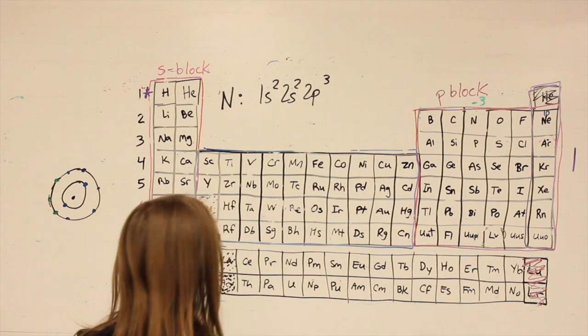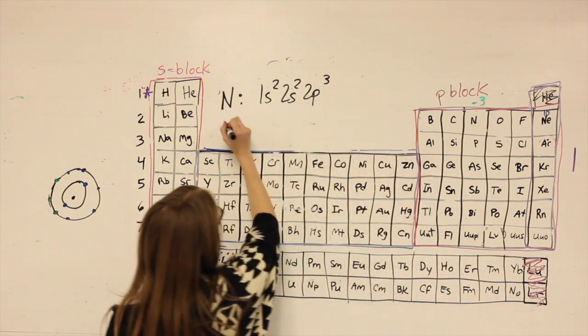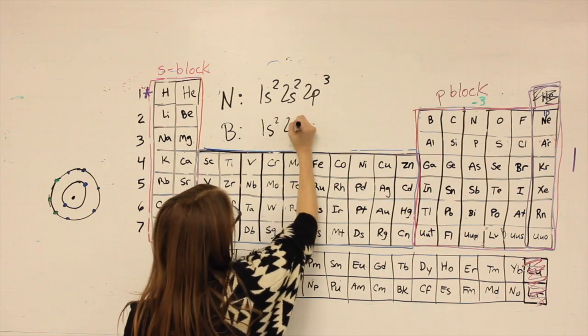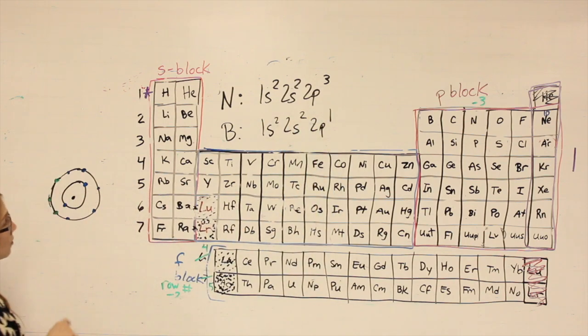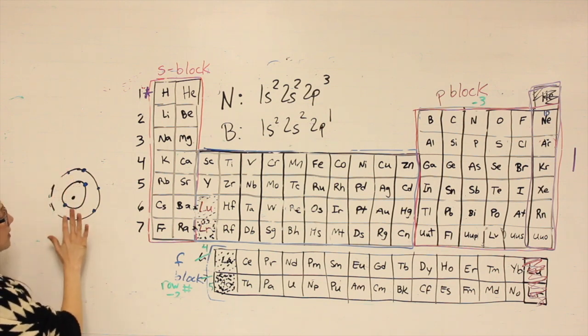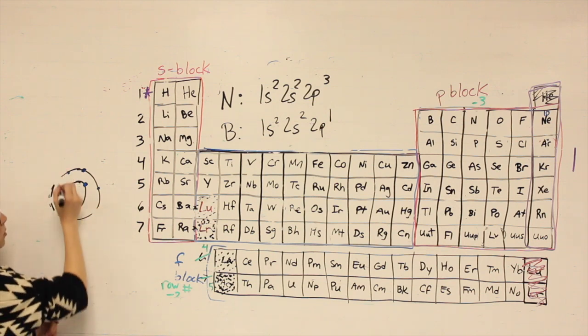If we're looking at something like boron, 1s2, 2s2, 2p1, it starts with only three electrons in its outermost shell.